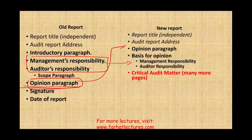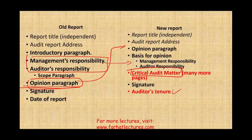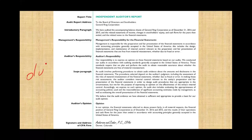Then they added a new paragraph called 'Critical Audit Matter.' This paragraph could span over many pages, depending on how many critical audit matters you are going to discuss. Then we have the signature, the auditor's tenure — which is also new, highlighted in red — and the date of the report. The auditor's tenure is a new addition. So the new report looks a little bit different, and it includes the critical audit matter, which represents a major change.